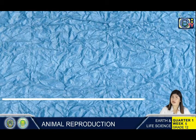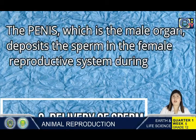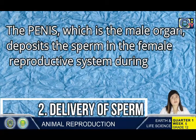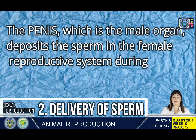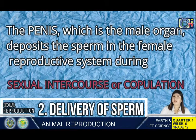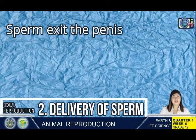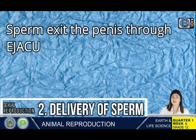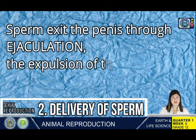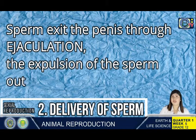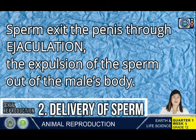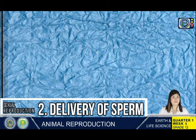In delivering the sperm, the penis — the male organ — deposits the sperm in the female reproductive system during sexual intercourse or copulation. The sperm exits the penis through ejaculation, which is the expulsion of the sperm out of the male's body.